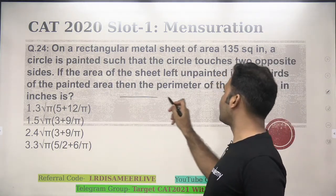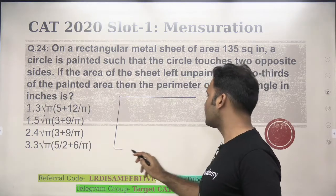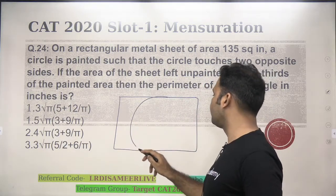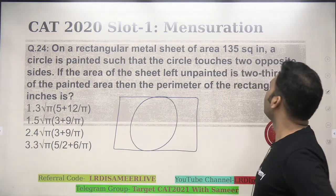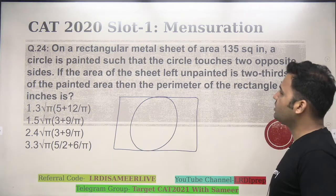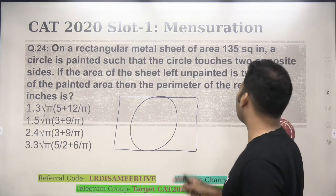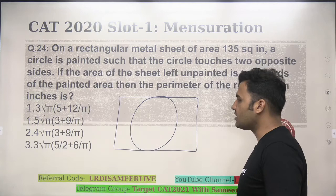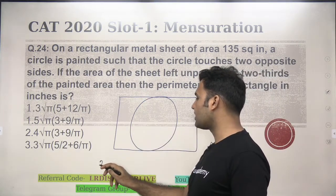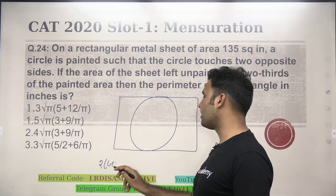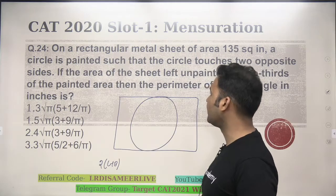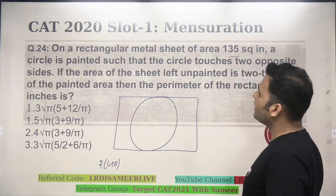Now, we have a rectangular sheet given to us and a circle is such that it is touching the opposite two sides here. If the area of the sheet left unpainted is two-third of the painted area, then the perimeter of the rectangle in inches is what? We are supposed to find out the perimeter of this rectangle and the perimeter we know is 2 times of L plus B. Now, this whole area is equal to 135.